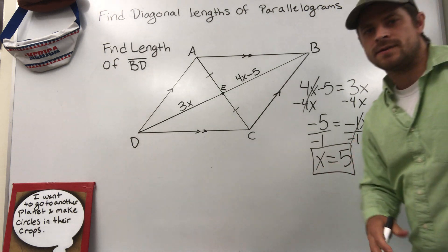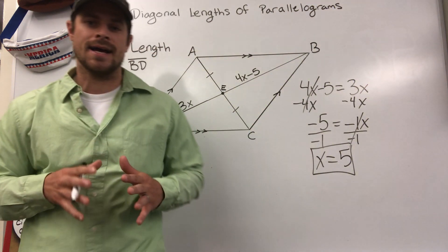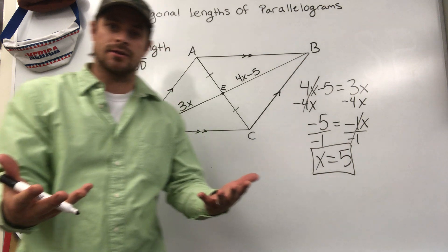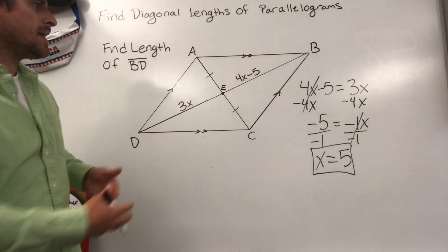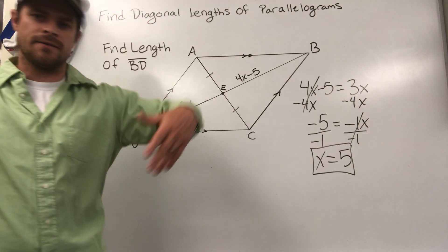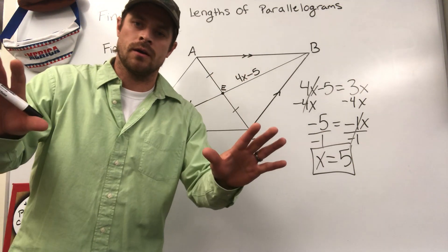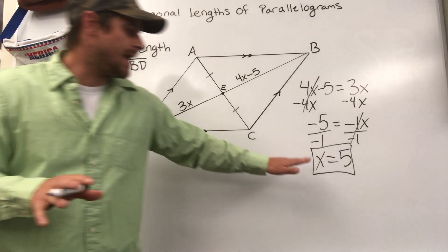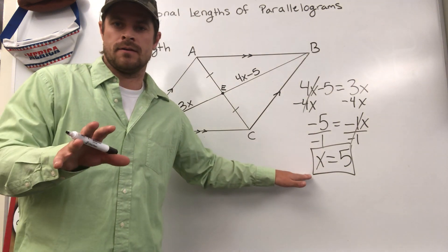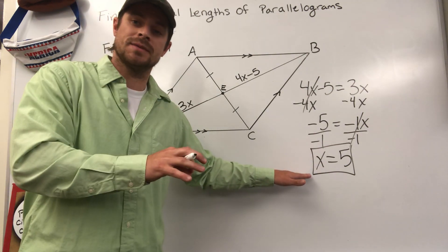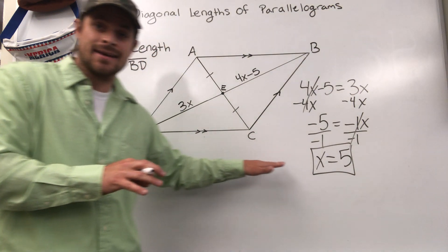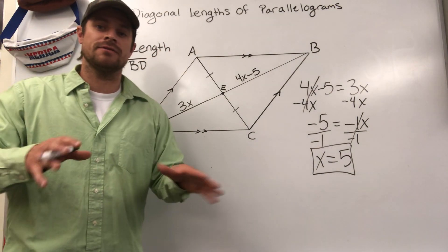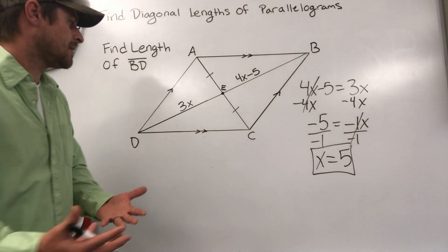So right now I know x is 5, and students every single year in my class will say 5 is their answer. They'll say DB or BD line segment BD is 5 inches, 5 feet, however many, 5 long. But it's not. X is 5, so the common error, the common mistake that I see in my class is students will say 5 is the length. But 5 is not the length, 5 is just representing the value of x.